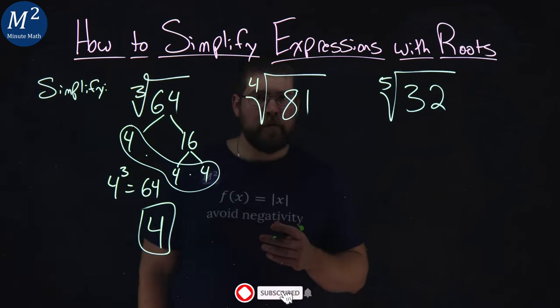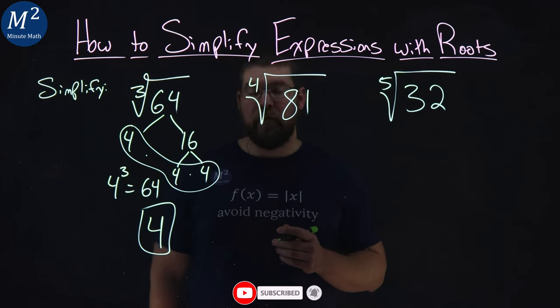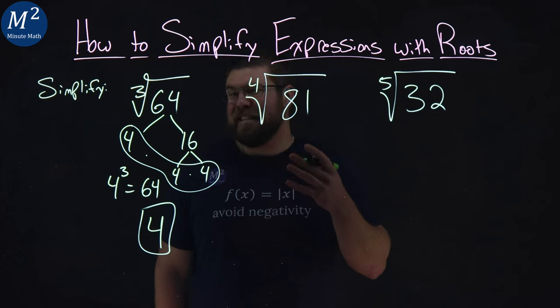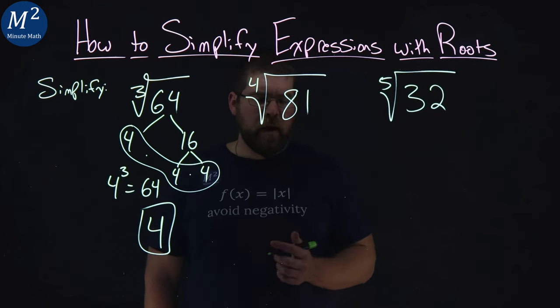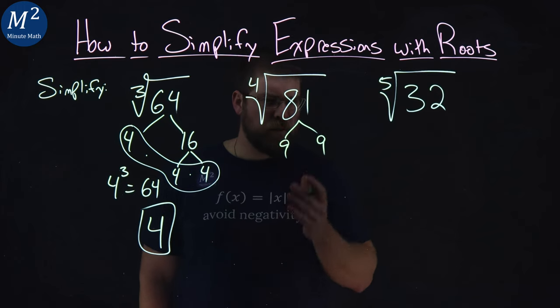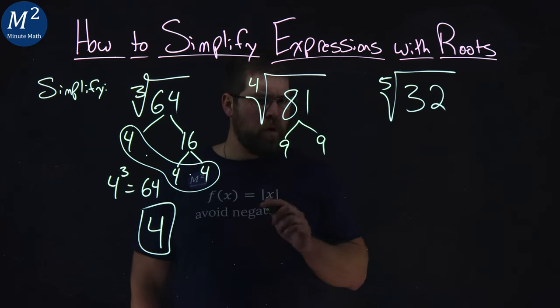Now, the second one, a little different. We have the fourth root of 81. So now we're trying to see what number multiplied by itself 4 times equals 81. Well, I know 81 is a 9 times a 9. That's only 2. I want 4.